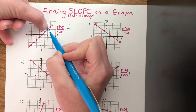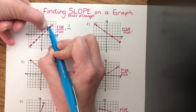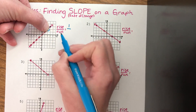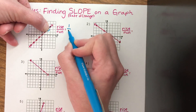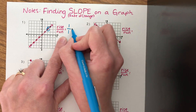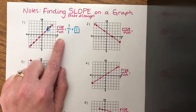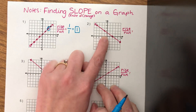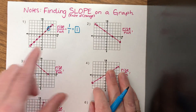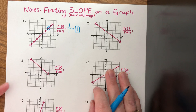Now I'm right here, and I count how many I go over to get to the next coordinate. I went right one, so my run is one — positive, because right is a positive movement. One over one is just one. On number one, this graph is going up, so just by looking at it I can tell it is a positive slope, because positive slopes go up.